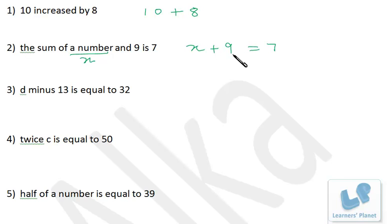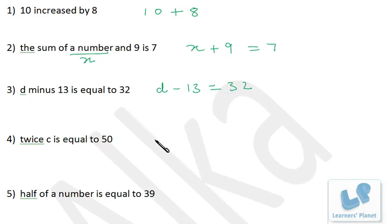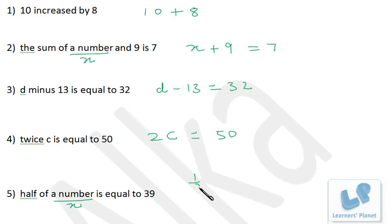Next: d minus 13 is equal to 32, which is straightforward — d − 13 = 32. Then: twice c is equal to 50, so 2c = 50. And half of a number is equal to 39. 'A number' you don't know, so take it as x. Half of x is equal to 39. 'Of' can be written as multiplication, so (1/2) × x = 39.